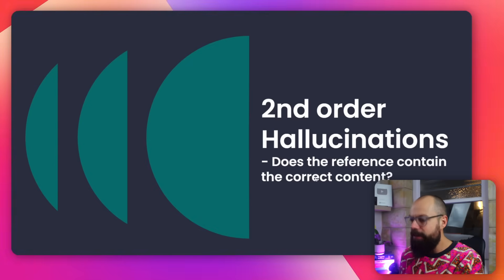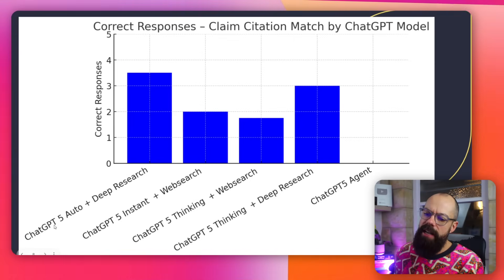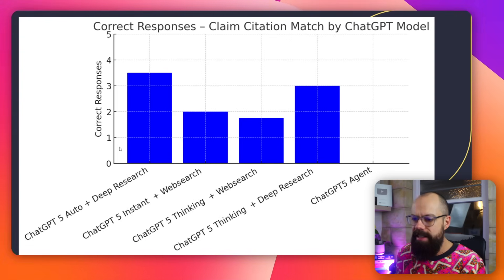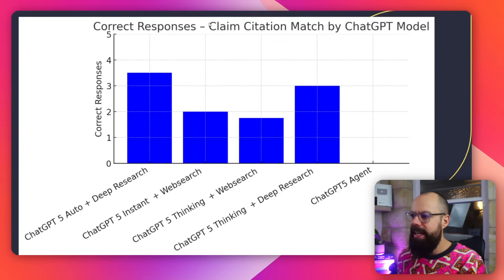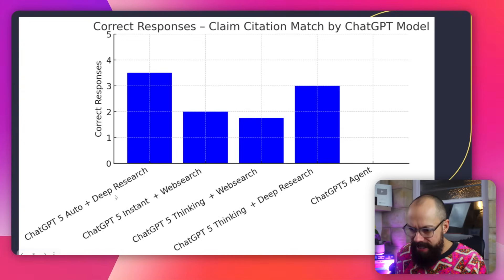Second order hallucinations is really what I'm interested in: the reference exists, but does it cite it for the right reasons? I've never seen a study like this on YouTube. The results show where things go wrong. Does the reference contain the correct content for why it's being referenced? ChatGPT 5 Auto plus deep research did the best again — but it's still not perfect, still getting a few citations slightly wrong. Adding deep research always makes it better, so use deep research when you can.